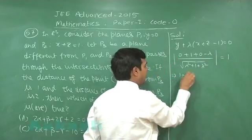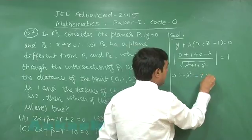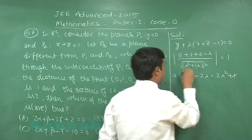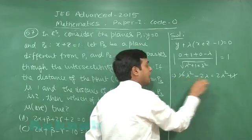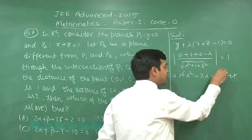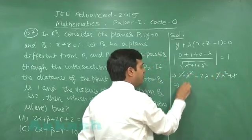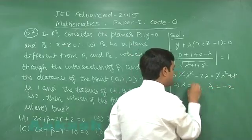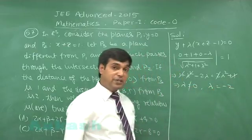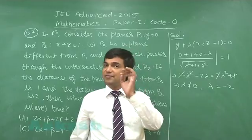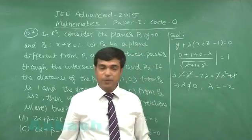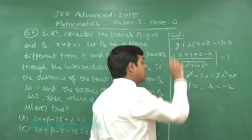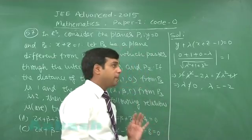Simplifying, we get 1 cancelled out and λ² cancelled out, leaving us with λ = 0 or λ = −2. But λ cannot be 0 because it is given that P3 is different from P1 and P2. So, on substituting λ = −2, we will get the required plane.